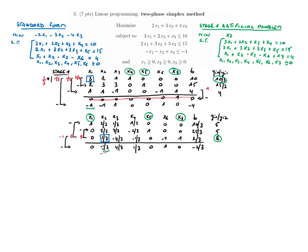The reduced cost r for x2 is still negative, so x2 should join the base. We compute the column ratios: 10/3 divided by 2/3 equals 5, 25/3 divided by 5/3 equals 5, and 2/3 divided by 1/3 equals 2. The smallest positive ratio is 2, so that row gives the new pivot.